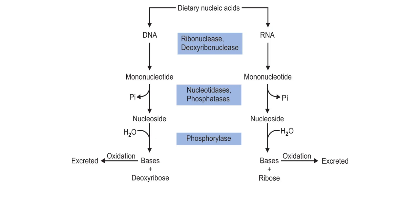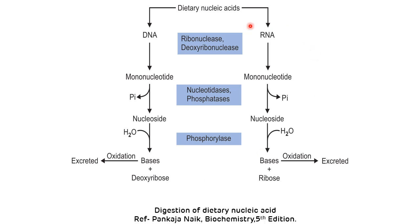Purine nucleotides and pyrimidine nucleotides are basically dietary non-essential compounds, and the dietary nucleic acids as well as dietary nucleotides do not provide any essential constituent for the synthesis of endogenous nucleic acids. Dietary nucleic acids present as DNA and RNA get degraded into mononucleotides by deoxyribonuclease and ribonuclease enzymes in intestinal and pancreatic secretions. Mononucleotides are further degraded into nucleosides by nucleotidase and phosphatase enzymes, and nucleosides are hydrolyzed into purines, pyrimidines, and pentose sugar. Purines get oxidized into uric acid; pyrimidines get oxidized into carbon dioxide and ammonia.